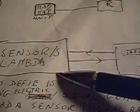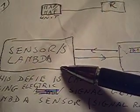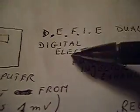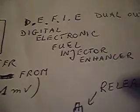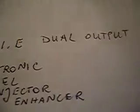Secondly, we have a sensor or sensors lambda in the exhaust system. We're going to connect a digital electronic fuel injector enhancer, dual output. So what does it do?